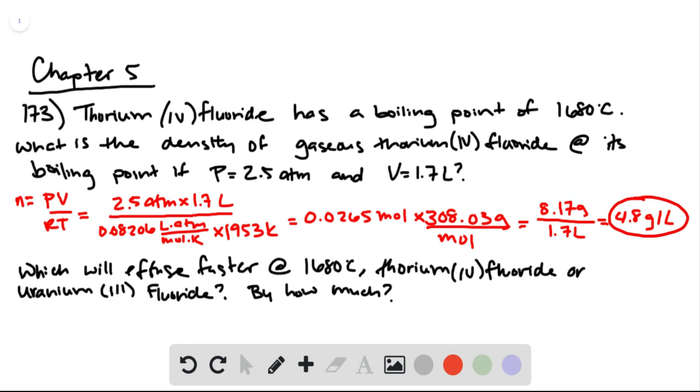To figure out the effusion rate, we can define the thorium compound as B and the uranium compound as A. The effusion rate of A over the effusion rate of B is equal to the square root of the molar mass of B over the square root of the molar mass of A.